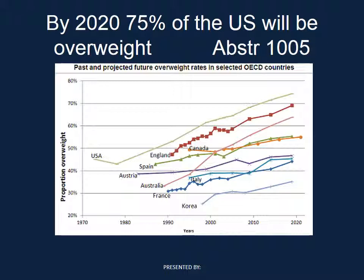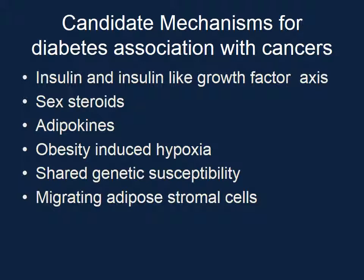Patients in our society who get this kind of endometrial cancer are often obese. As you probably know, there is an obesity epidemic in our country — by the year 2020, 75% of our nation will be overweight. This will drive the number of endometrial cancers up, increasing the number of patients like the one I just described. There are many mechanisms hypothesized to link cancer with diabetes and obesity, including insulin, insulin-like growth factor, sex steroids, and adipokines.